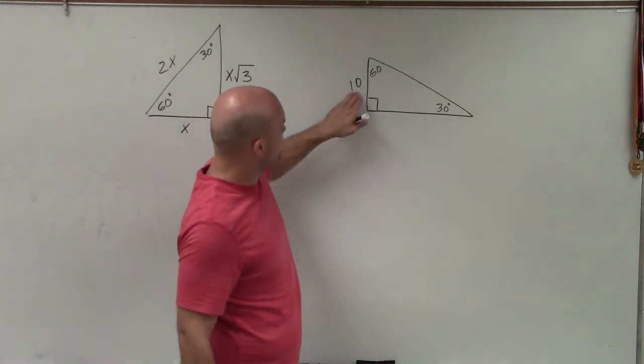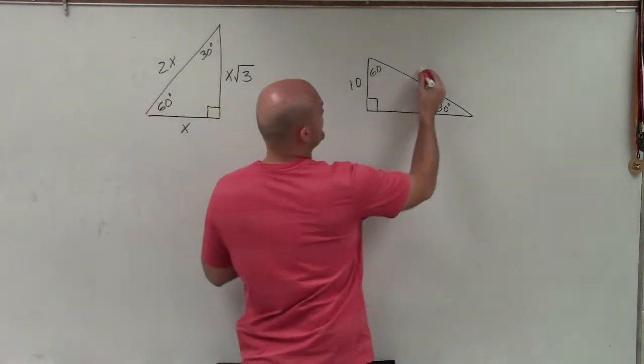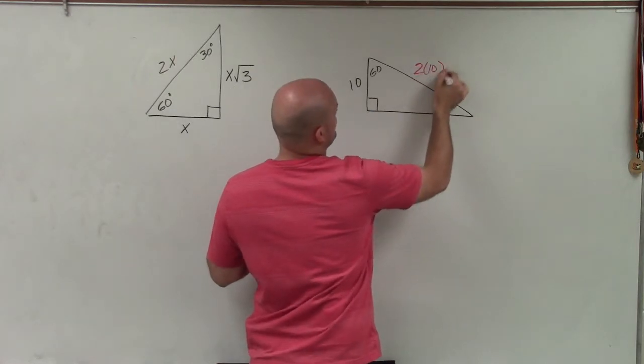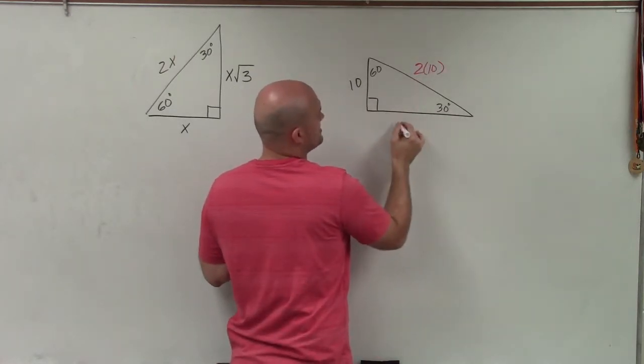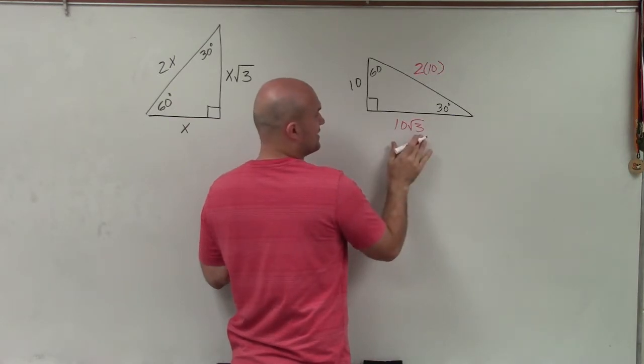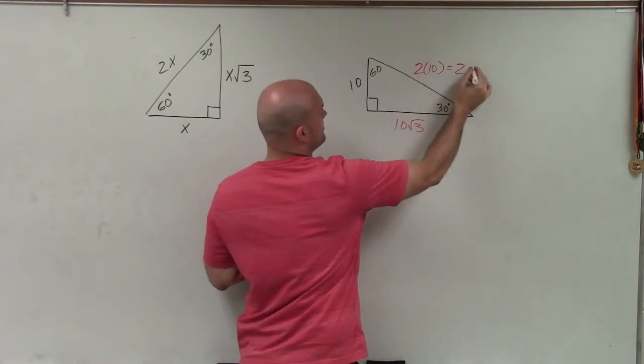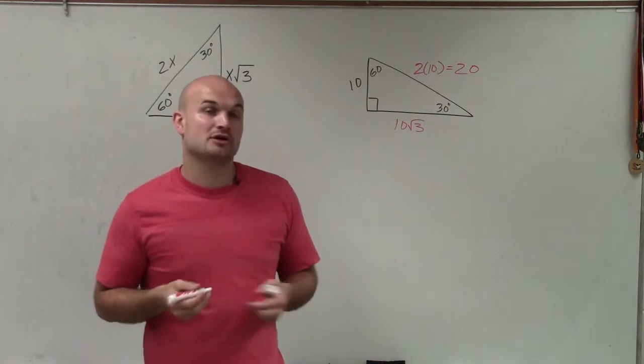In this case, to find the hypotenuse, I simply do 2 times 10. To get the long leg, I take 10 times the square root of 3. This cannot be simplified any further, but 2 times 10 we can represent as 20.